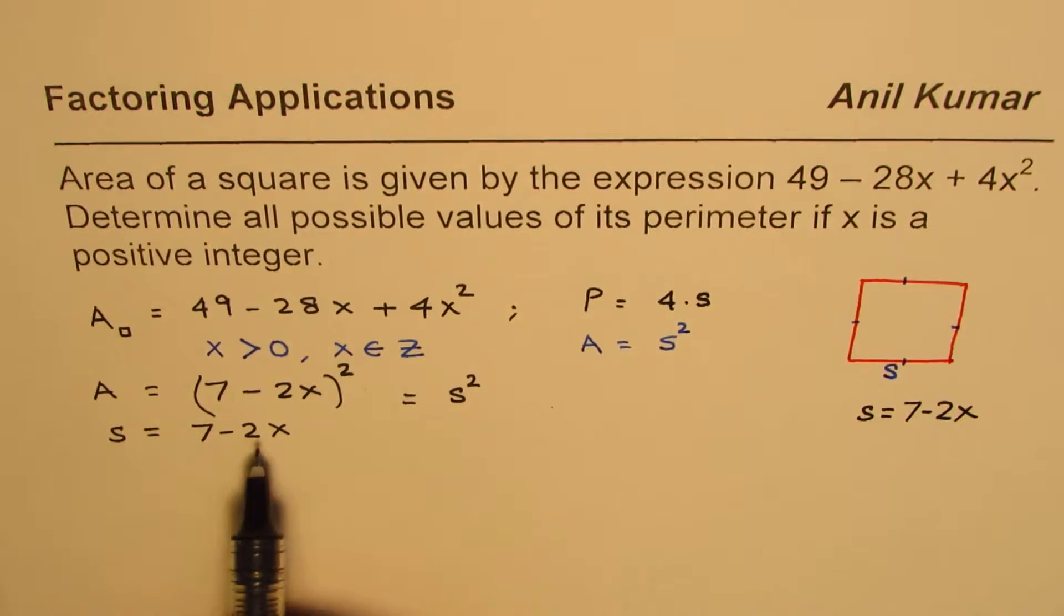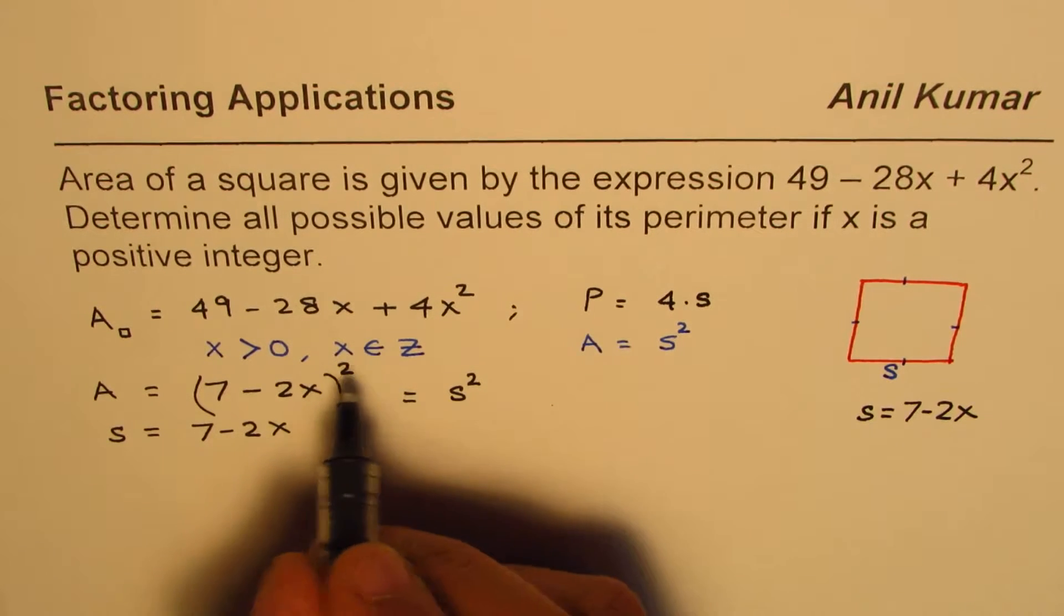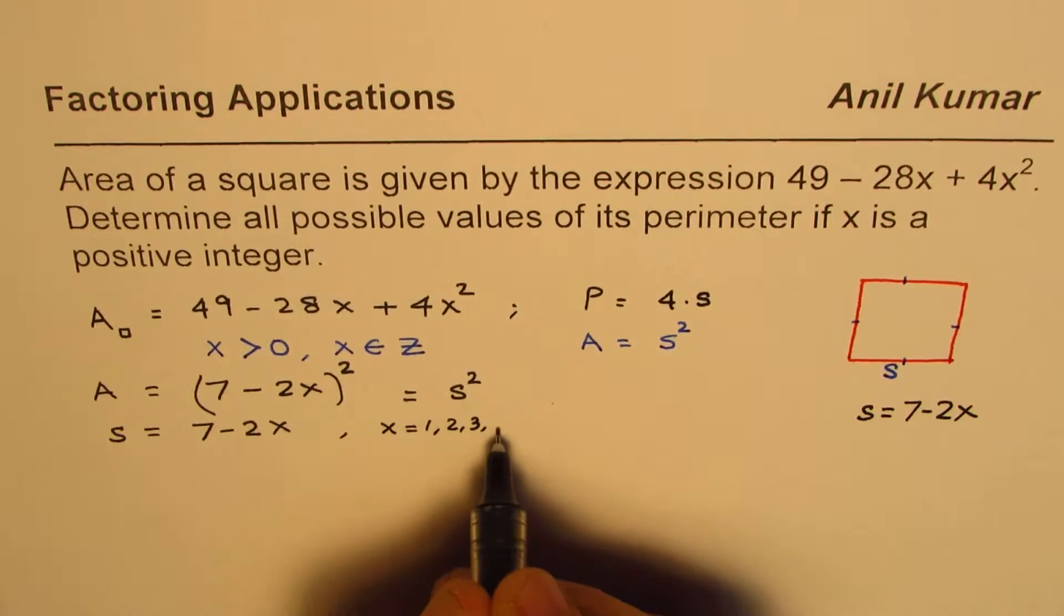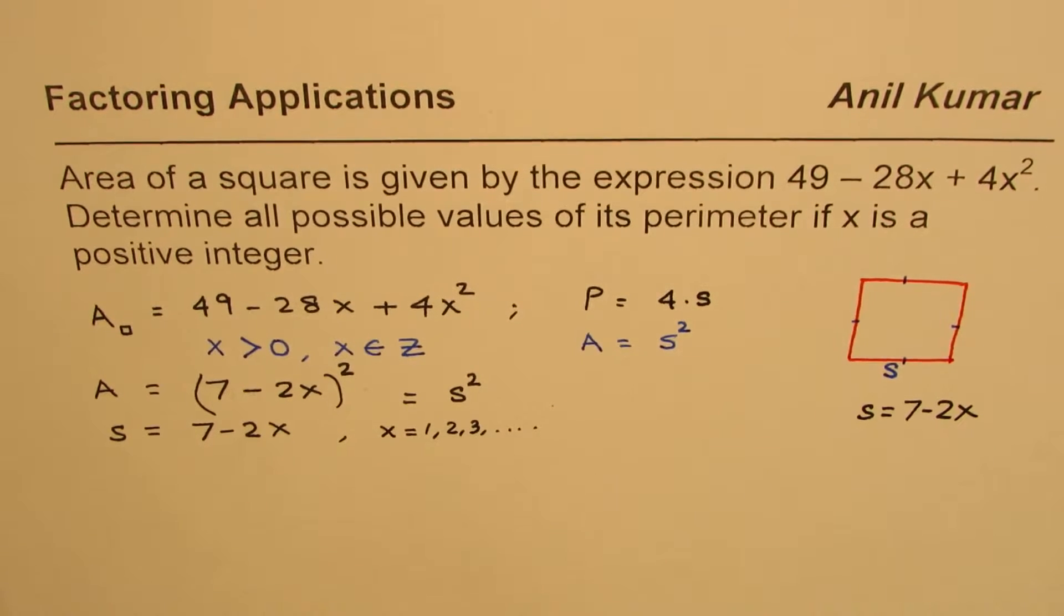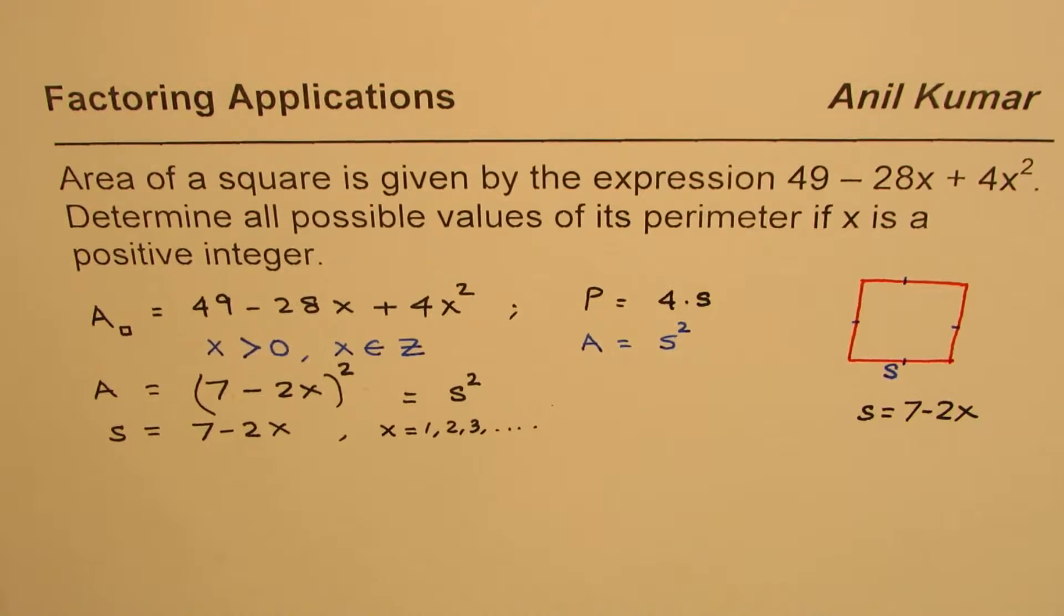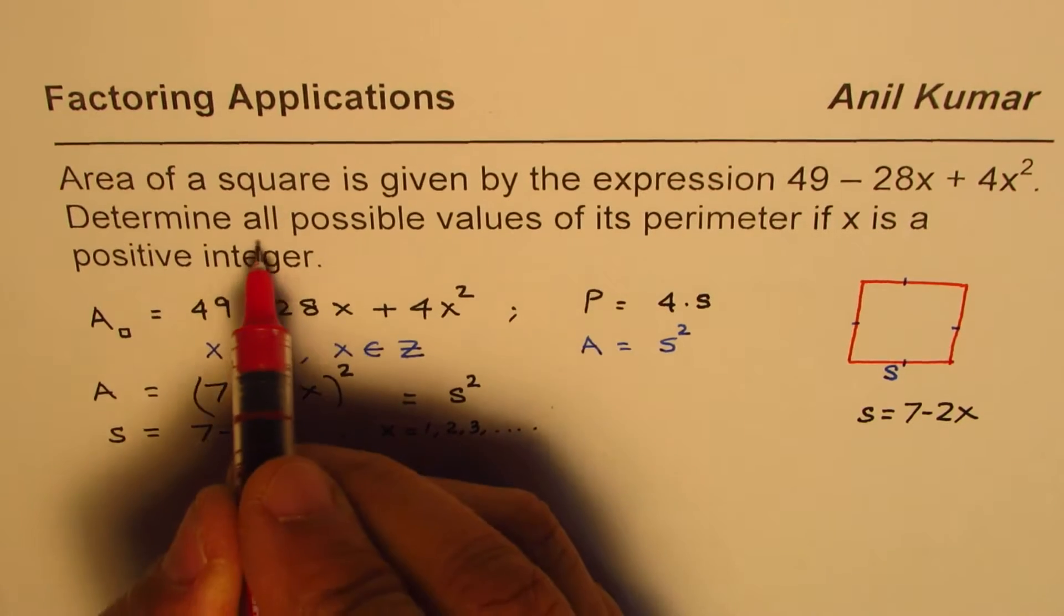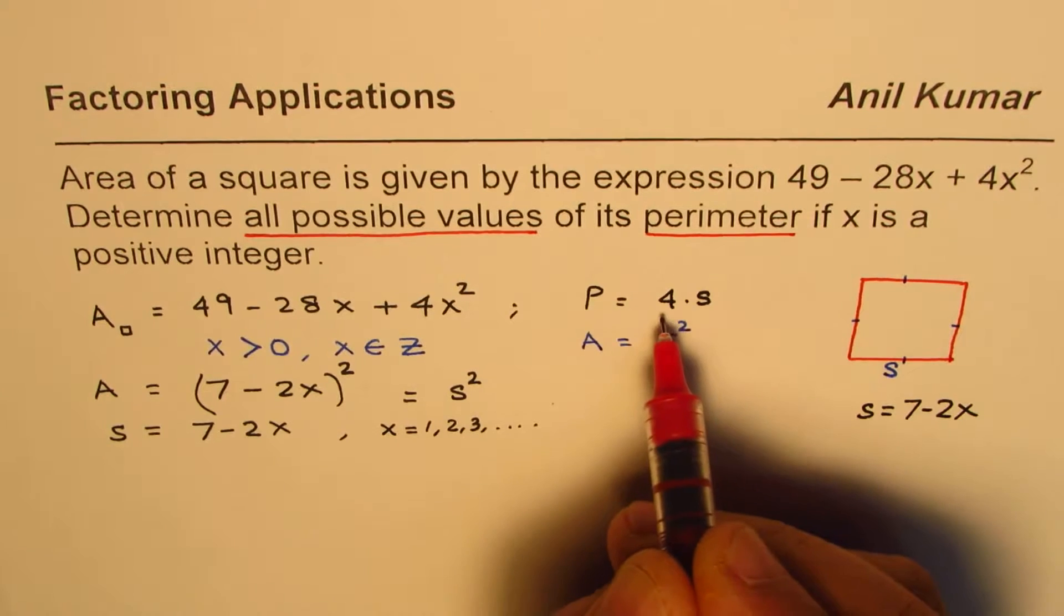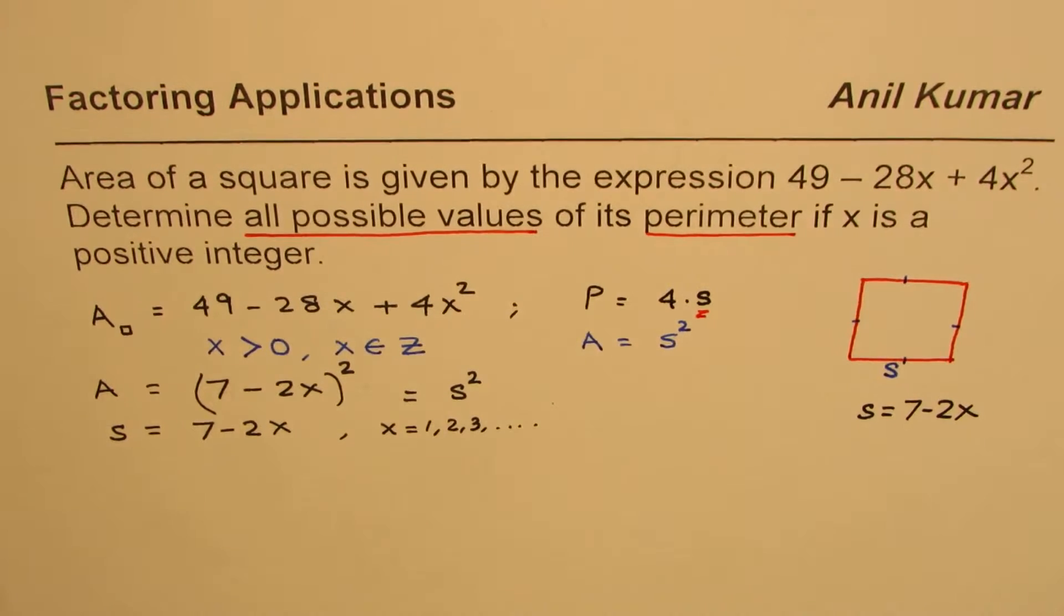Now we have found side length in terms of a variable which is x. And x could be any number like 1, 2, 3, 4 and so on. So let us substitute these values to find all possible values of the side first. It says determine all possible values of perimeter. We will get to perimeter but let us find possible values of side.